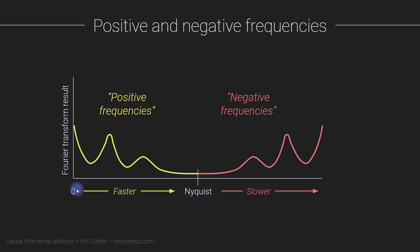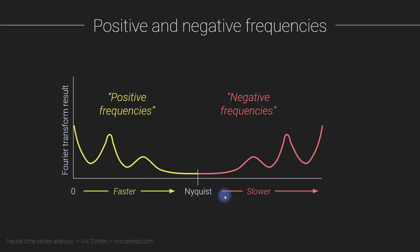There is one key difference between the positive and negative sides of the spectrum: the zero frequency, or DC component, only exists on the left side — the positive spectrum. There is no corresponding negative zero frequency because zero frequency has no sign: positive zero is the same as negative zero, there's only one zero. So we have one zero on the left, and all other frequencies up to Nyquist get repeated on the right with a negative sign attached.